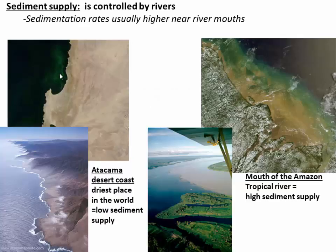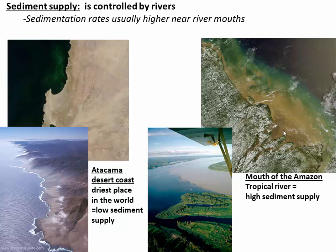Another factor determining facies is sediment supply, mostly controlled by rivers. For example, the North Chilean coast in the Atacama region is a desert with very few active rivers, so there's basically no sediment supply to that coast. In contrast, the mouth of the Amazon River is a huge tropical river choked with muddy sediment delivering that material into the ocean — the areas along shore are also very muddy because the mud gets worked along the shoreline. These create very different facies environments.